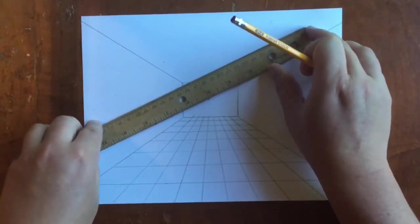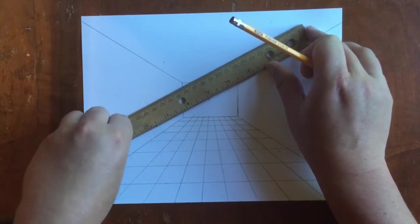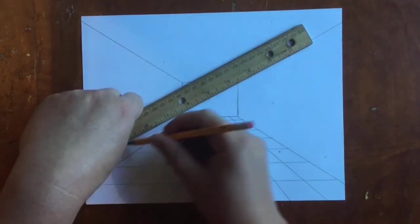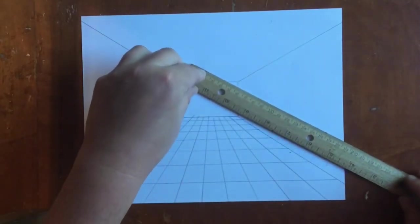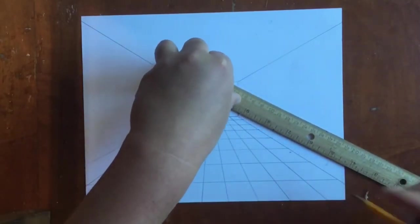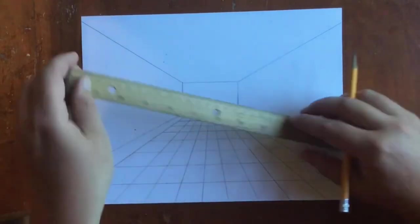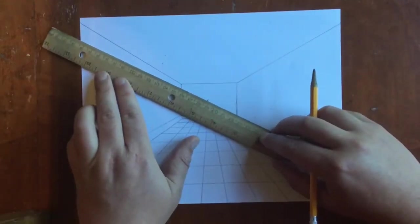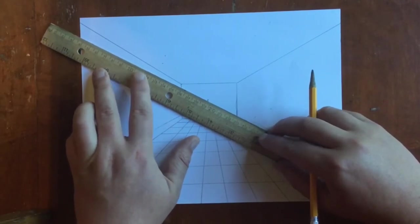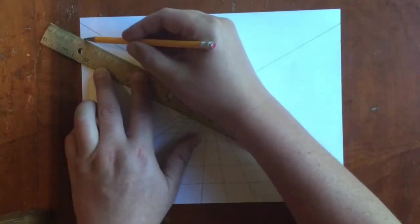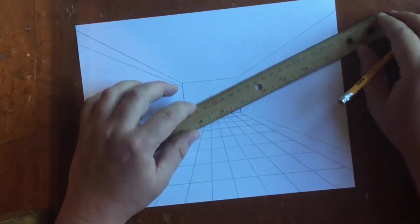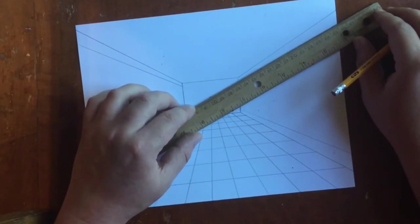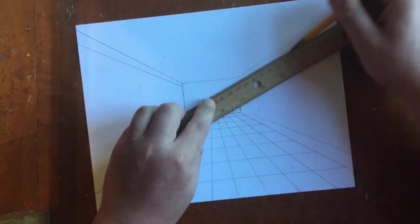We're going to start by taking our ruler, lining it up with the vanishing point, and making lines going from the outside of the rectangle all the way off the paper. I'm going to keep my ruler touching the vanishing point once again. That's an important step. It won't look right if you don't do that. I'm going to do this to all four corners of my paper so there's kind of a ledge before the window starts.